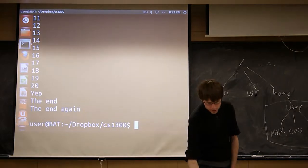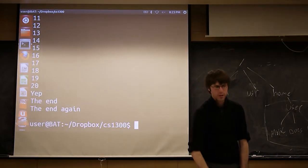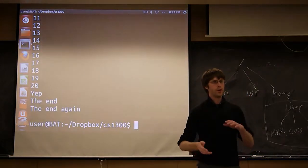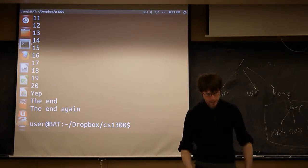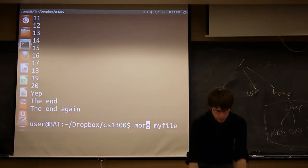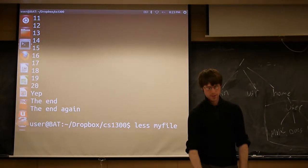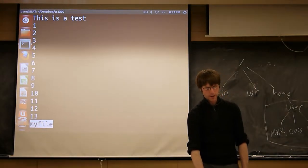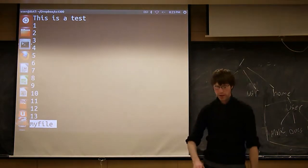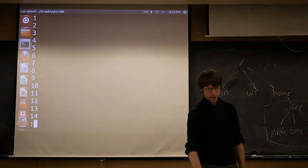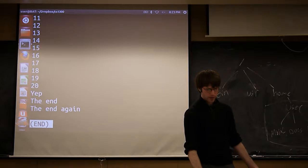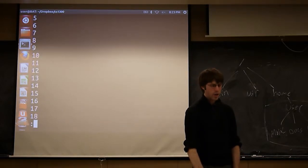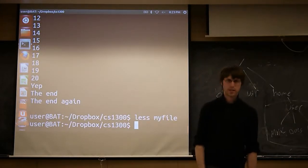The problem with more is you can only kind of go in one direction. You can just go forward through the file, you have no ability to scroll through or anything like that. So we wrote a better version of more, called less. This is Unix humor for you. So if you run less my file, it kind of behaves the same way, only now you can use the arrow keys. So I can scroll up and I can scroll down, I can essentially scroll through the entire file. So when I'm done, you need to hit Q to exit.